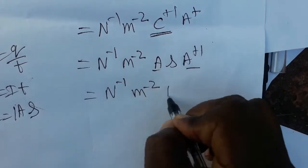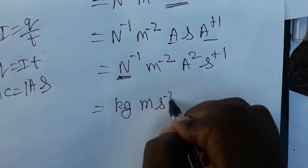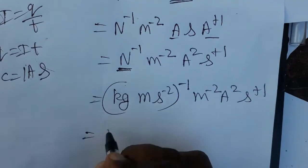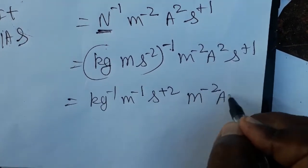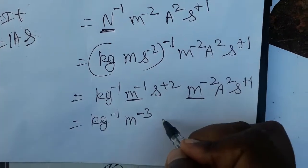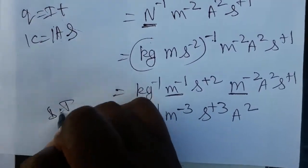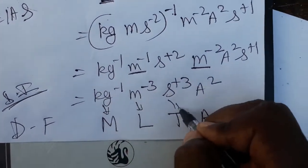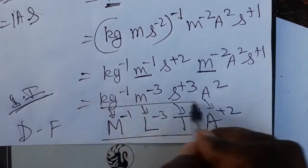Newton is force: mass into acceleration, so newton equals kg times meter times second minus 2. Substituting newton inverse gives kg minus 1, meter minus 2, ampere squared, second plus 1. Combining all terms: kg minus 1, meter minus 3, second plus 3, ampere squared. So the SI unit for conductivity is ohm inverse meter inverse, and the dimensional formula is M minus 1, L minus 3, T plus 3, A plus 2. Thank you.